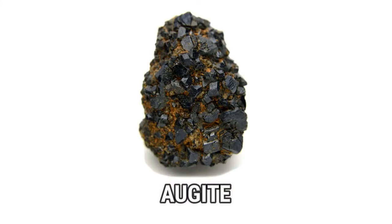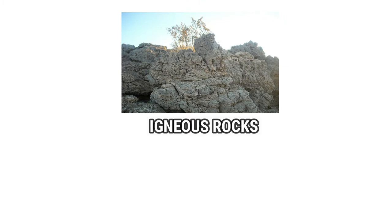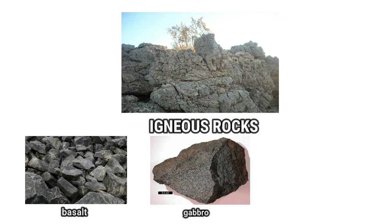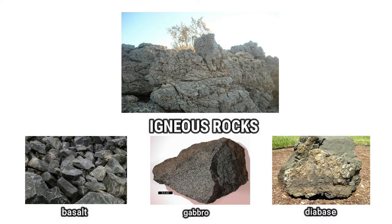The first mineral is augite. Augite is a dark green or black aluminum silicate mineral of the pyroxene group. It occurs in many igneous rocks including basalt, gabbro, and diabase.